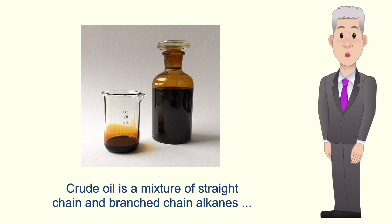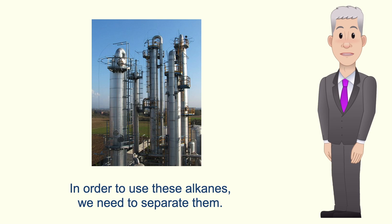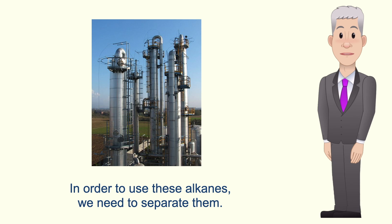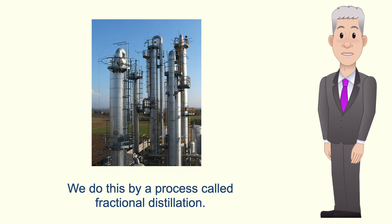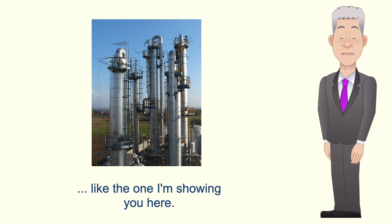Crude oil is a mixture of straight chain and branch chain alkanes along with other chemicals such as sulfur, but in order to use these alkanes we need to separate them. We do this by a process called fractional distillation, which is carried out in tall fractionating columns like the one shown here.